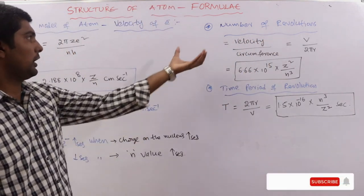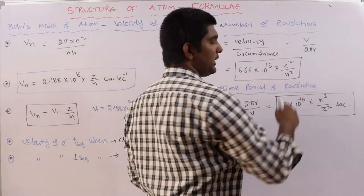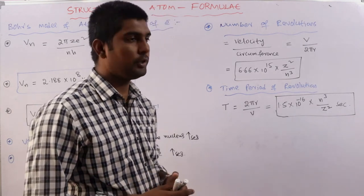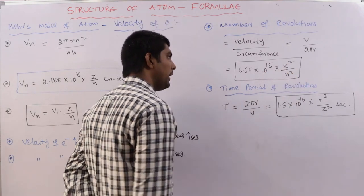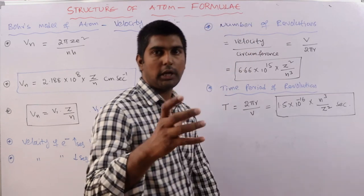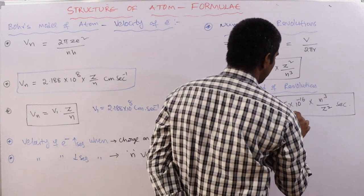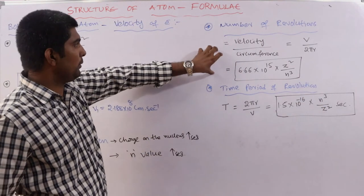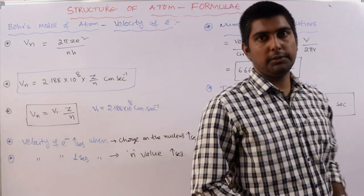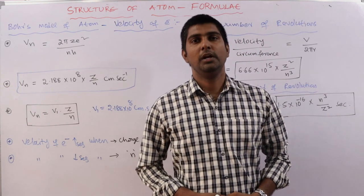Number of revolutions per second = v/2πr = 6.66 × 10¹⁵ × Z²/n³. Time period of one revolution T = 2πr/v = 1.5 × 10⁻¹⁶ × n³/Z² seconds — the reciprocal of number of revolutions. The remaining important points and formulae will be discussed in the next video.